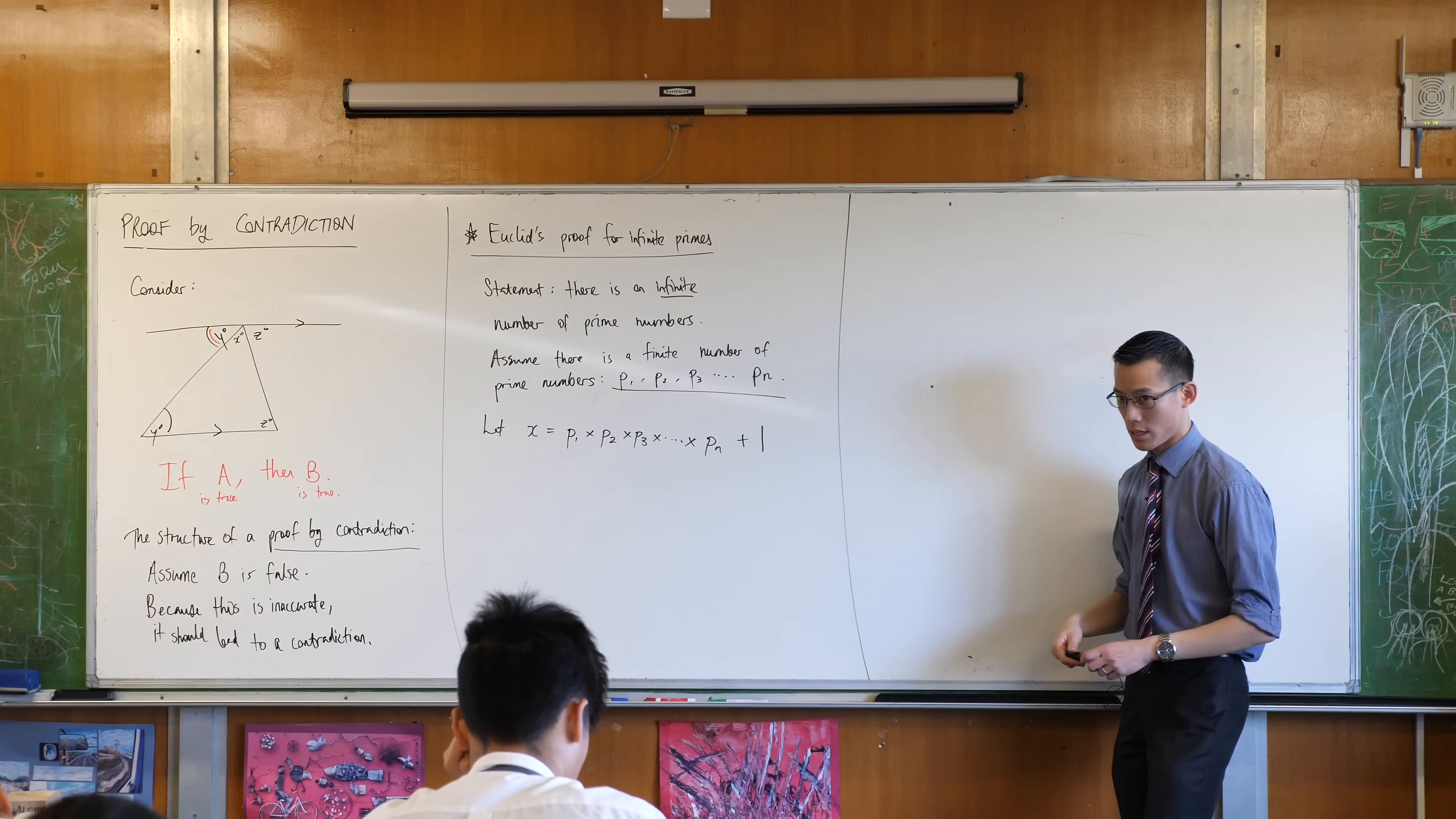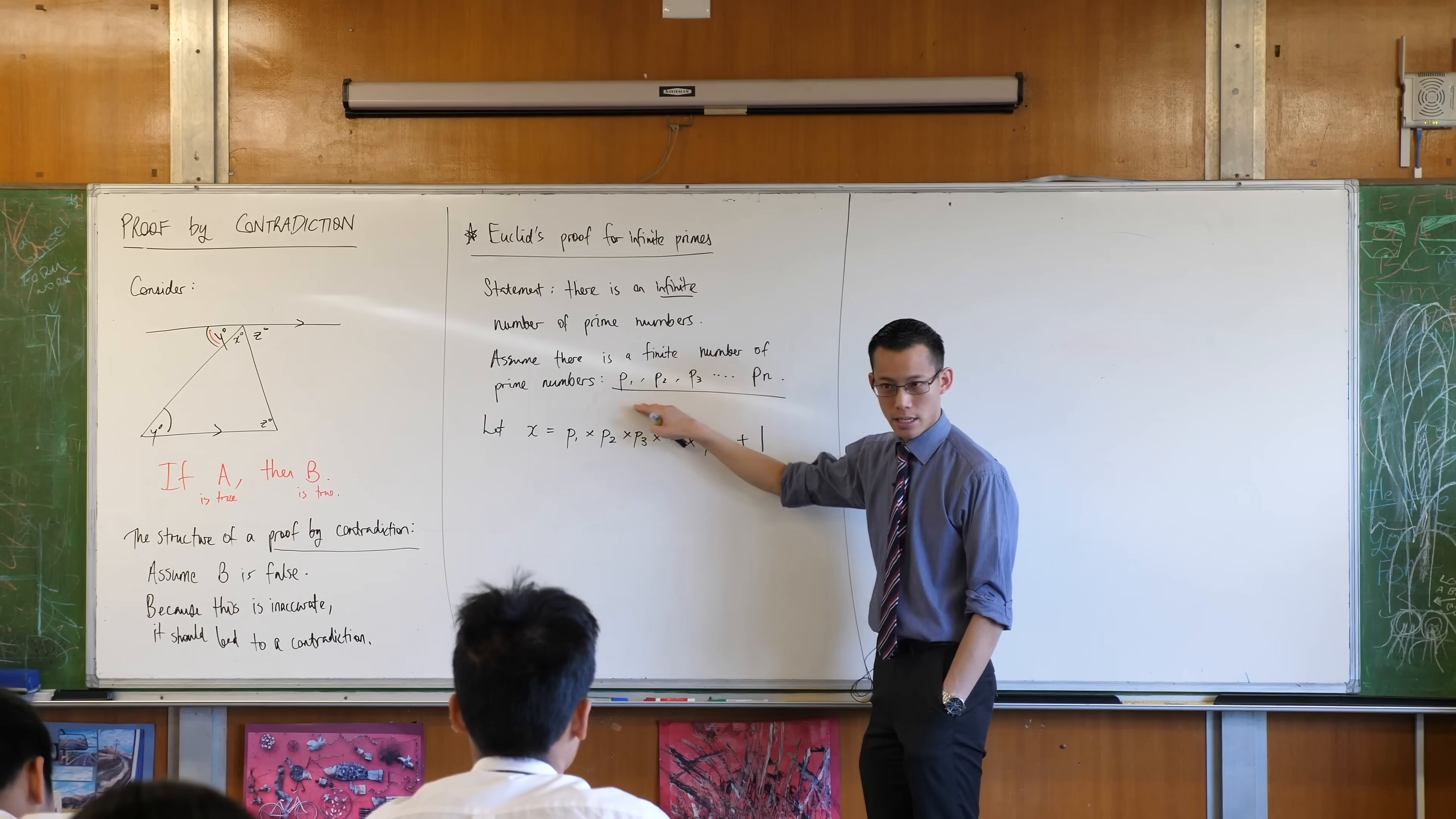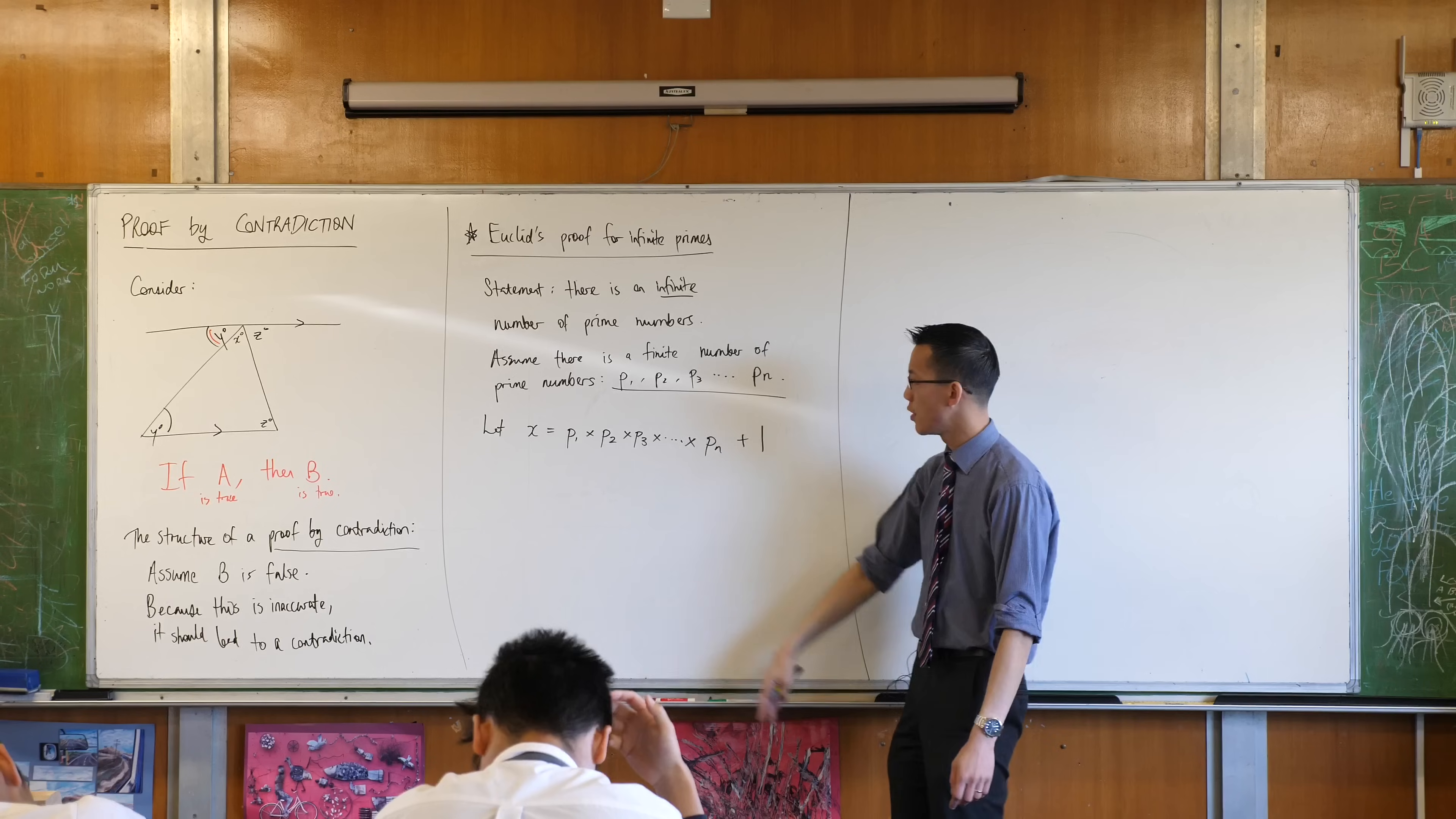Now, remember what he's trying to do. He's trying to show that, in fact, this here, this assumption, is going to lead to a problem. So I'm assuming this is a complete list, right? If I can prove that it's not a complete list, then I've got a sort of self-contradictory situation, and that will be the proof, okay?